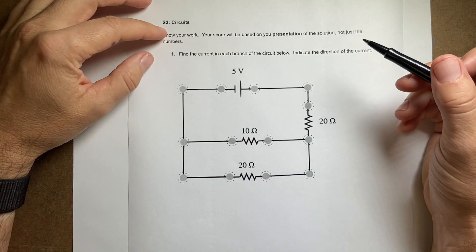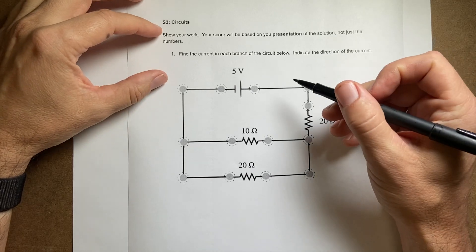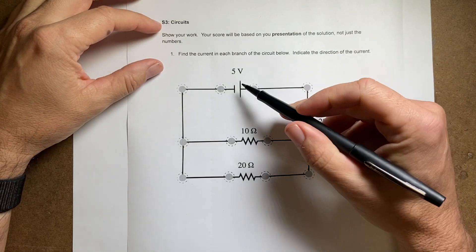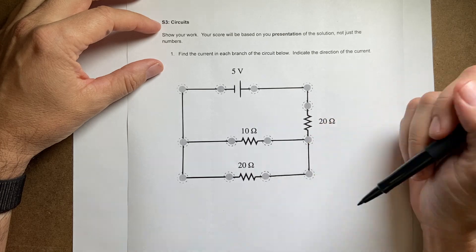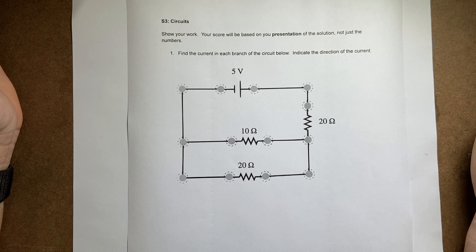Okay, so here is an electric circuit problem that I made. The question says I have a 5 volt battery, 20 ohm, 10 ohm, 20 ohm resistors and the question is what's the circuit, what's the electric current and direction in each branch.